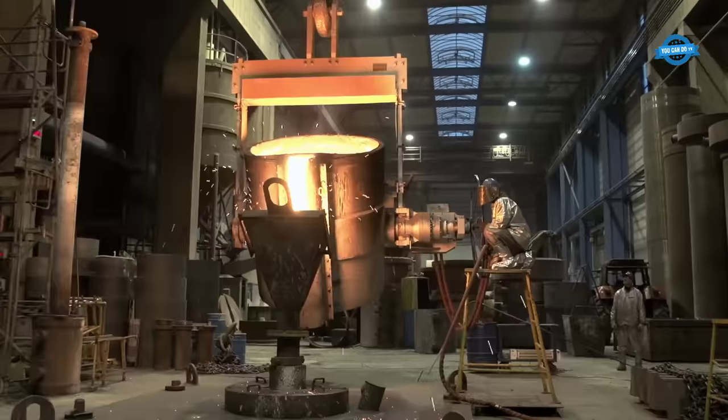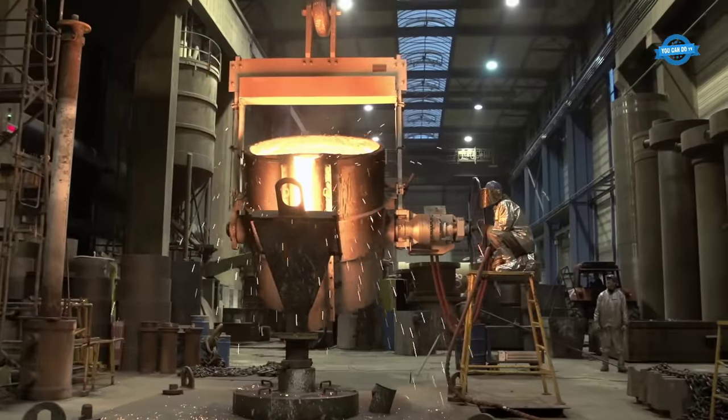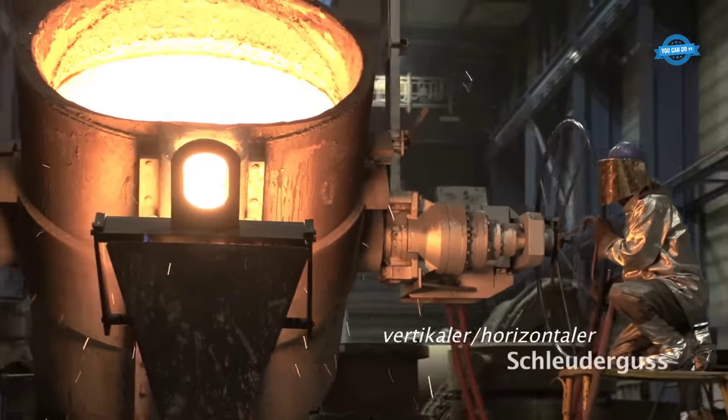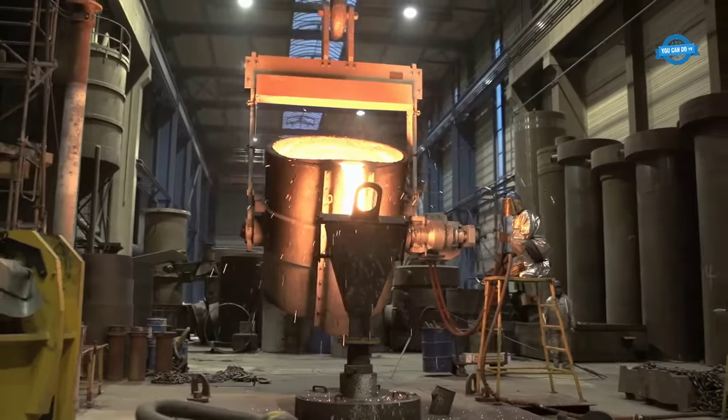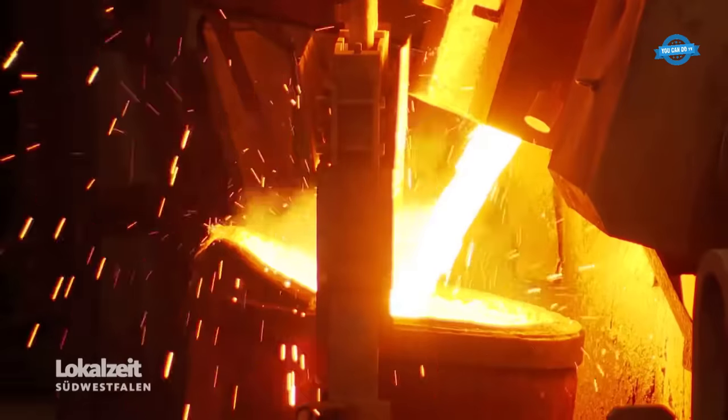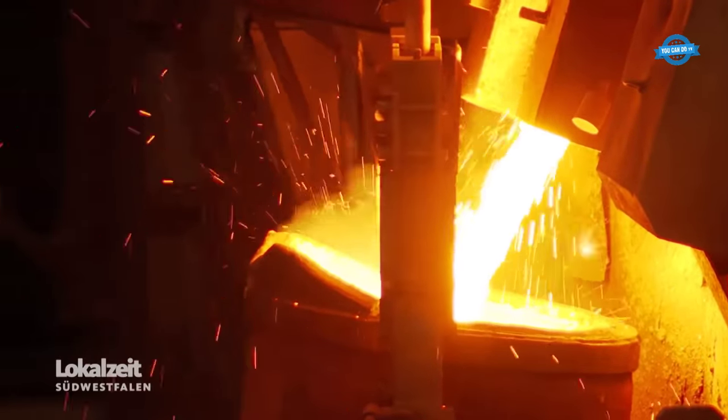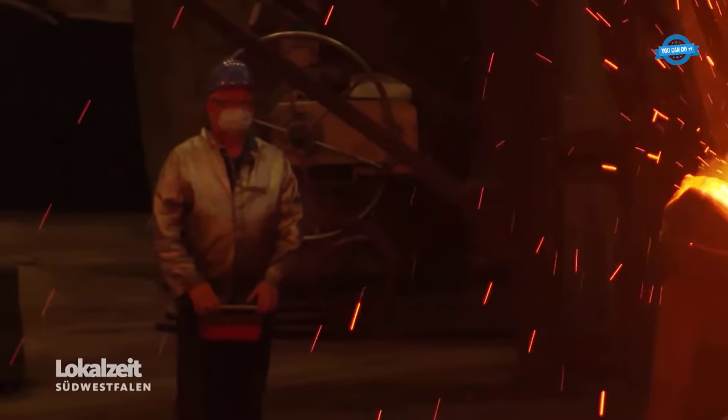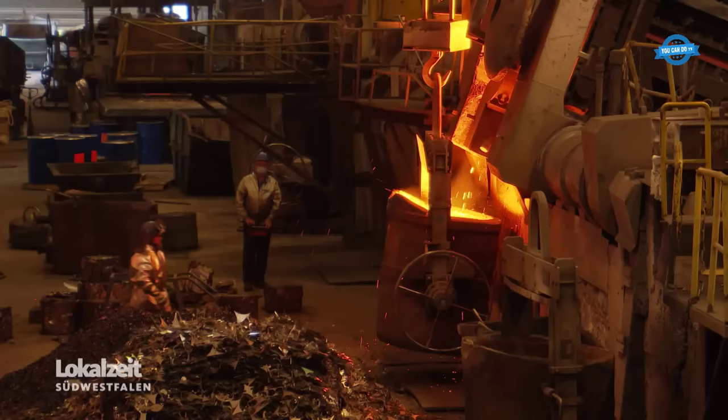The production process starts with preparing the molds using oil sands. The foundry mechanics meticulously create the molds, leaving clean and precise imprints which are essential for ensuring the roller's quality. Once the molds are ready, the liquid iron, heated to around 1,500 degrees Celsius, is carefully poured into the molds with expertise gained from over 200 years of experience.